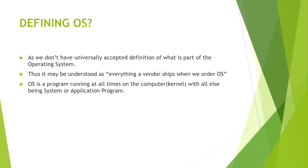Regarding defining an OS, there is no universally accepted definition. Whatever the vendor ships when we order an OS can be considered part of the operating system. The OS is a program running at all times on the computer. Application programs are not part of the operating system — they are different. The operating system is separate and is part of the kernel.